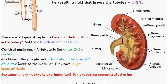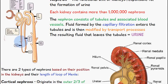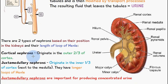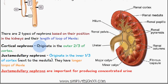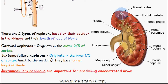There are two types of nephrons, based on their position in the kidney and the length of the loop of Henle. We have cortical nephrons and juxtamedullary nephrons. Cortical nephrons originate in the outer two-thirds of the cortex, while juxtamedullary nephrons are located in the inner one-third of the cortex, closer to the medulla.